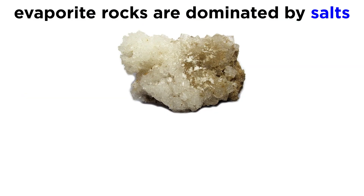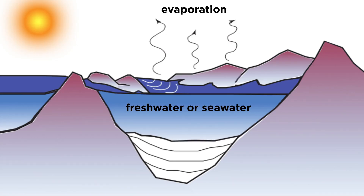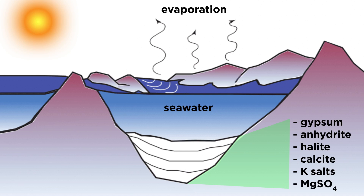Because evaporite rocks precipitate from natural waters, they are dominated by minerals that are salts. The carbonate, chloride, and sulfate salts are especially common. Evaporite rocks can form from the evaporation of either freshwater or seawater, with the water's chemistry being the main factor determining which evaporite minerals precipitate and in what order. Marine evaporites are dominated by the calcium sulfate minerals gypsum and anhydrite, as well as halite, with lesser amounts of calcite, potassium salts, and magnesium sulfate.